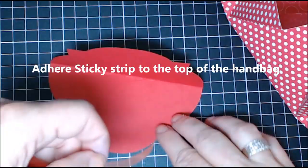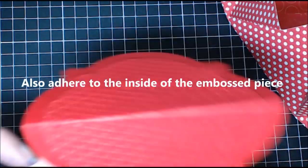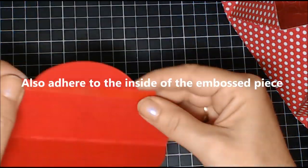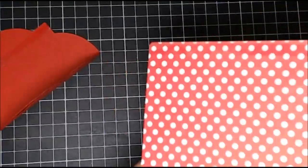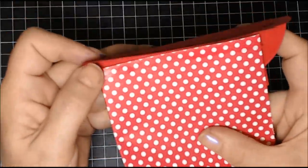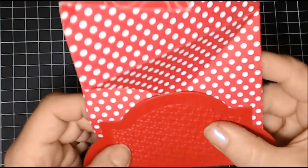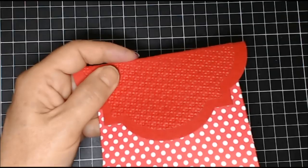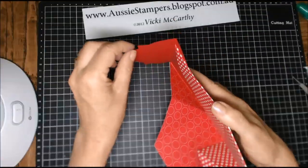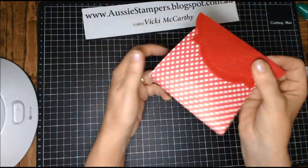Now you're going to adhere sticky strip to the top of the handbag and to one side, the inside of that piece you've just folded over. And then this is going to adhere to what will be the back of the little handbag. And you're going to line up those two pieces together. So they look like this and I'll show you in a minute how that opens. You just want it all lined up beautifully. And you can see how that's attached and so there's the mechanism for the handbag.